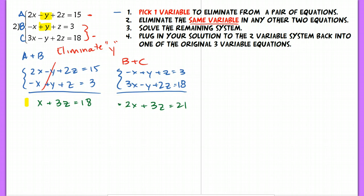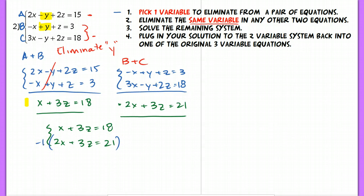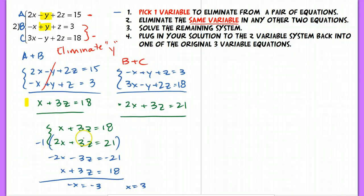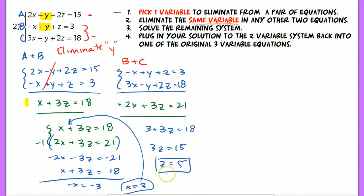Step three says to solve the remaining system. You now have two equations with two variables, and we can easily solve a two-variable system using elimination or substitution. I'm going to use elimination and multiply by negative one throughout. After applying elimination, I get x equals 3. Now I plug x equals 3 back into the two-variable system to solve for z, and I end up with z equaling 5. So now I have two of my unknowns solved.